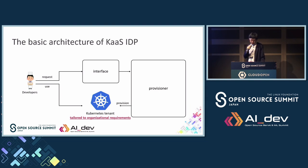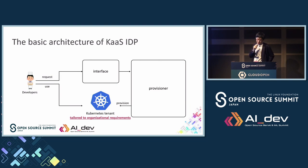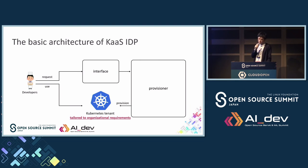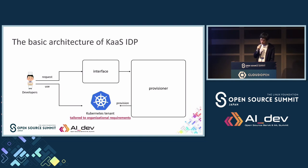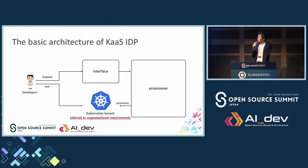While there are challenges with the cluster admin approach, I believe the structure of the previous slide is a very good starting point for our Kubernetes IDP. What I mean is: first, replace the boxes in the previous slide with abstracted concepts. For example, chat system to interface, the task of a cluster administrator to provisional, and cluster itself to tenant. We can consider this as a basic architecture of Kubernetes as a service IDP. And then, recreate the interface and provisional as more automated things.